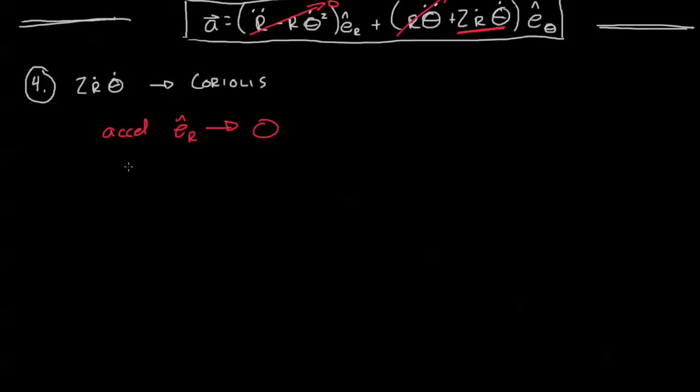In order to make that happen we know theta double dot, that is going to be zero. What we're left with is only the Coriolis acceleration, something that has these characteristics. What might it look like?